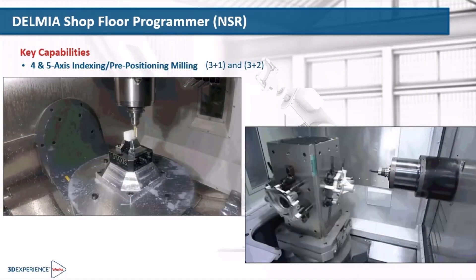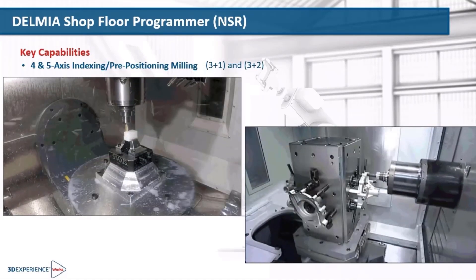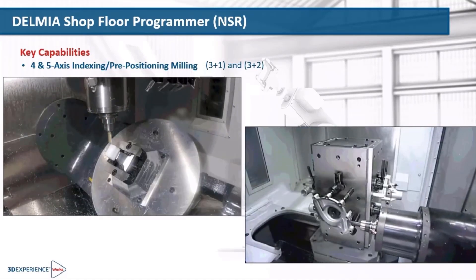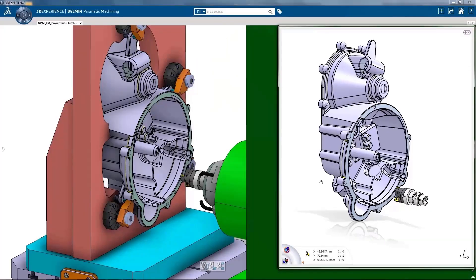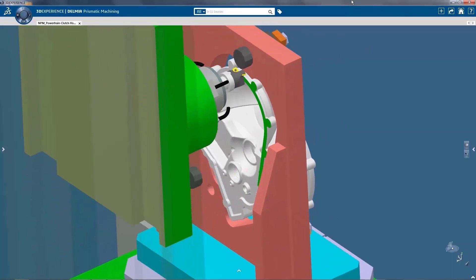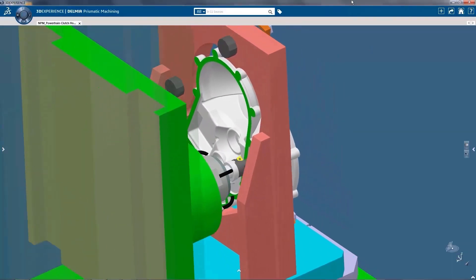Shop Floor Programmer allows users to program their CNC milling machines with accessories that have capabilities for 4- and 5-axis indexing and prepositioning.